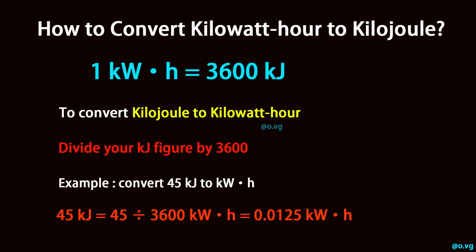To convert kilojoule to kilowatt-hour, divide your kilojoule figure by 3600.